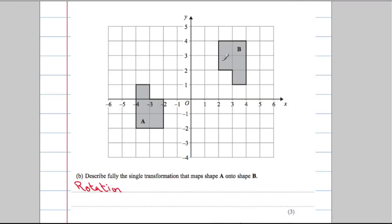So that tells me what's happening, but I also want to know how far it's rotating. If you've got a keen eye it should be fairly obvious — it's rotated 180 degrees. So it's a rotation of 180 degrees, because everything has essentially been flipped. But it's been rotated around a point, and I need to know what that point is.